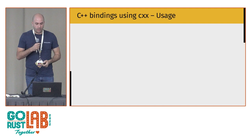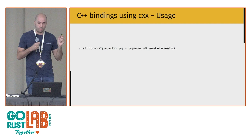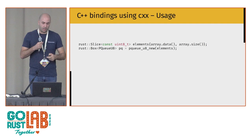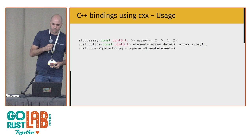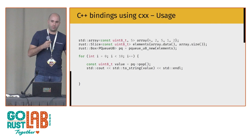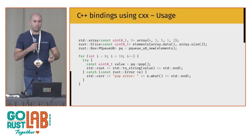Let's look at how we might use our queue from C++. This is C++ code: we create a `rust::Box`, call the constructor and pass it elements — where elements is a `rust::Slice` backed by a standard C++ array — then loop and pop from the queue, printing values. To handle errors we can use exceptions, printing the exception message whenever we get one.